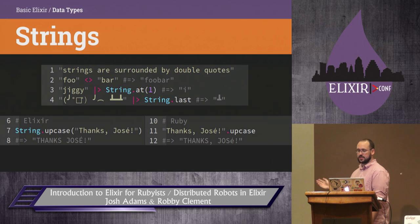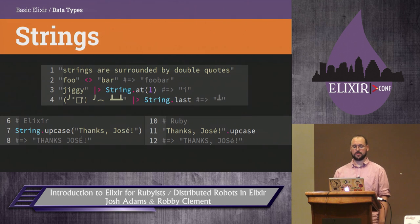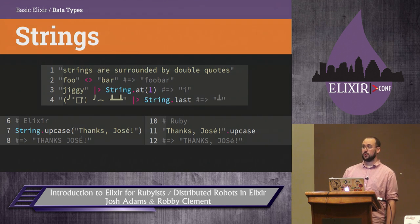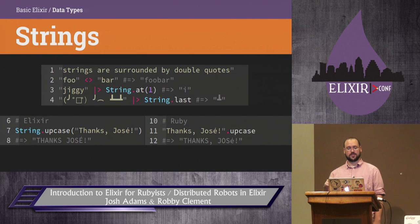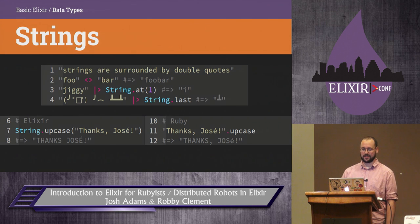Strings are just like strings in Ruby, except they aren't objects, and they handle Unicode better than Ruby — although Ruby's gotten a little bit better. Elixir's still better. If you want to see really cool metaprogramming, look at how Elixir builds out its Unicode support from the Unicode data.txt code point file. It's very neat.